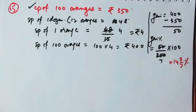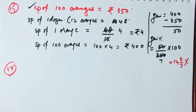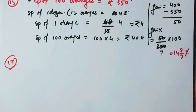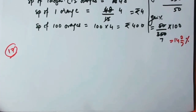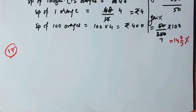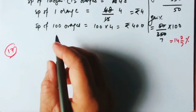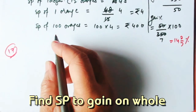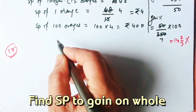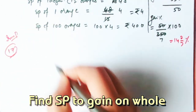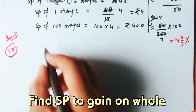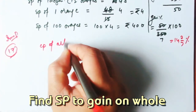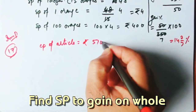Number 16 is of the same type, so moving on to number 17, the last problem. An article is bought for ₹5700 and ₹1300 is spent on repairs. This repair amount is an overhead expense — an extra cost beyond the purchase price.